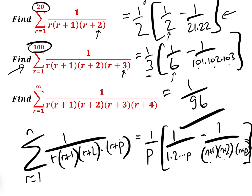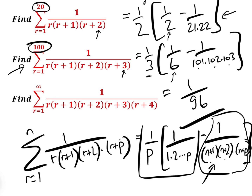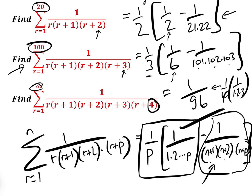For the sum from r equals 1 to infinity, this term clearly approaches 0 as n approaches infinity, so the formula becomes 1/p times 1 over (1×2×3×···×p). Here p=4, so it's 1/4 times 1 over (1×2×3), which is 1/96. So you can solve them by inspection.